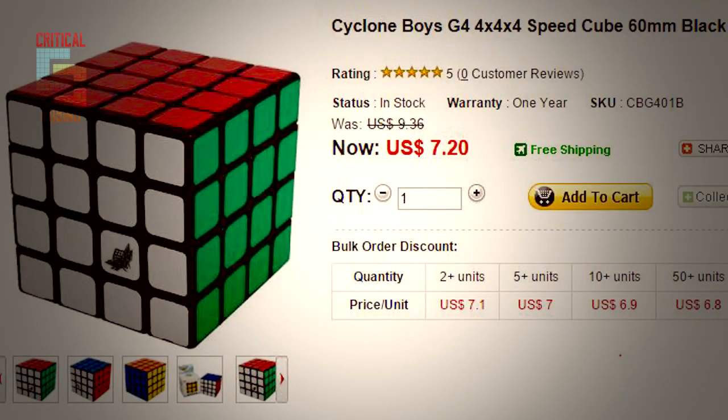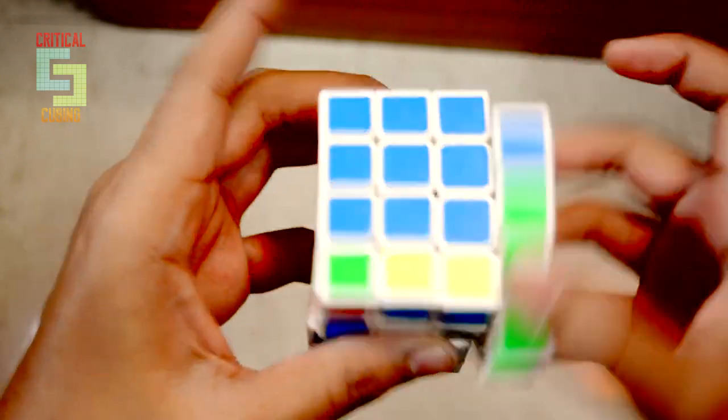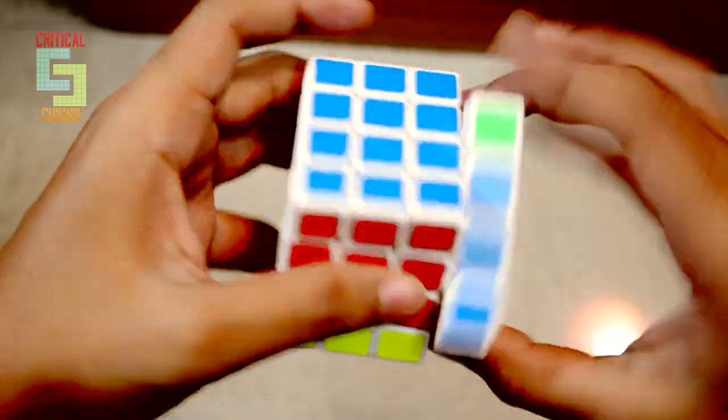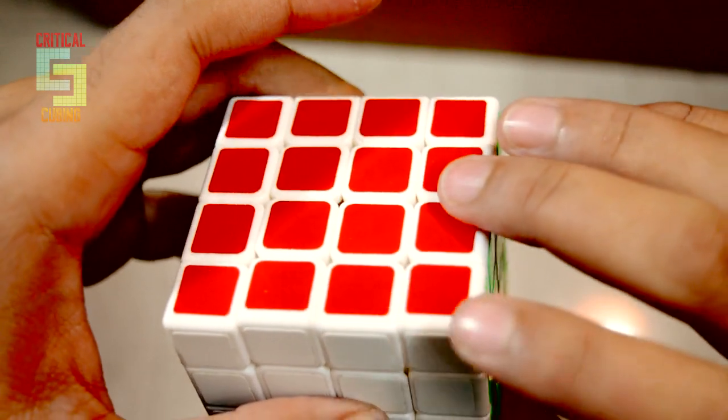I have a Yuxin 4x4 also, but my Aosu was better than the Yuxin. The cube was made to be a budget 4x4 giving nice performance for a low price tag. The starting of the name is similar to the Guanlong, and YJ made the Guanlong as well.